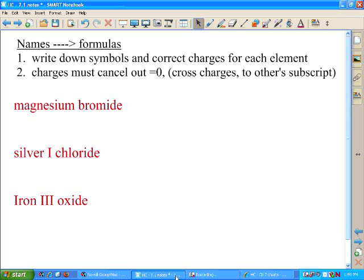So quick practice here. You've got a name. We're going to change it to a formula. So two very simple steps. Write down the symbols and the correct charges for everything that's involved. And then remember, the charges have to cancel out. We cross charges to make the other subscript. You guys did this on the test. We did this on the quiz worksheet last week. This part should be very easy.